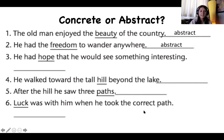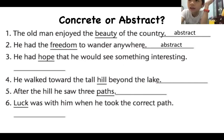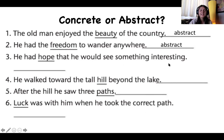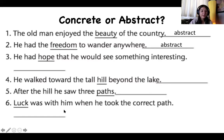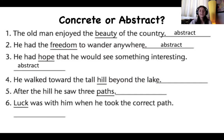Number three, Fred reads: 'He had hope that he would see something interesting.' The underlined noun is hope. Kitty identifies it: hope is an abstract noun. With the word hope, it's a feeling inside of you — you feel hopeful that something will happen. It's not something you can see, touch, smell, or taste.